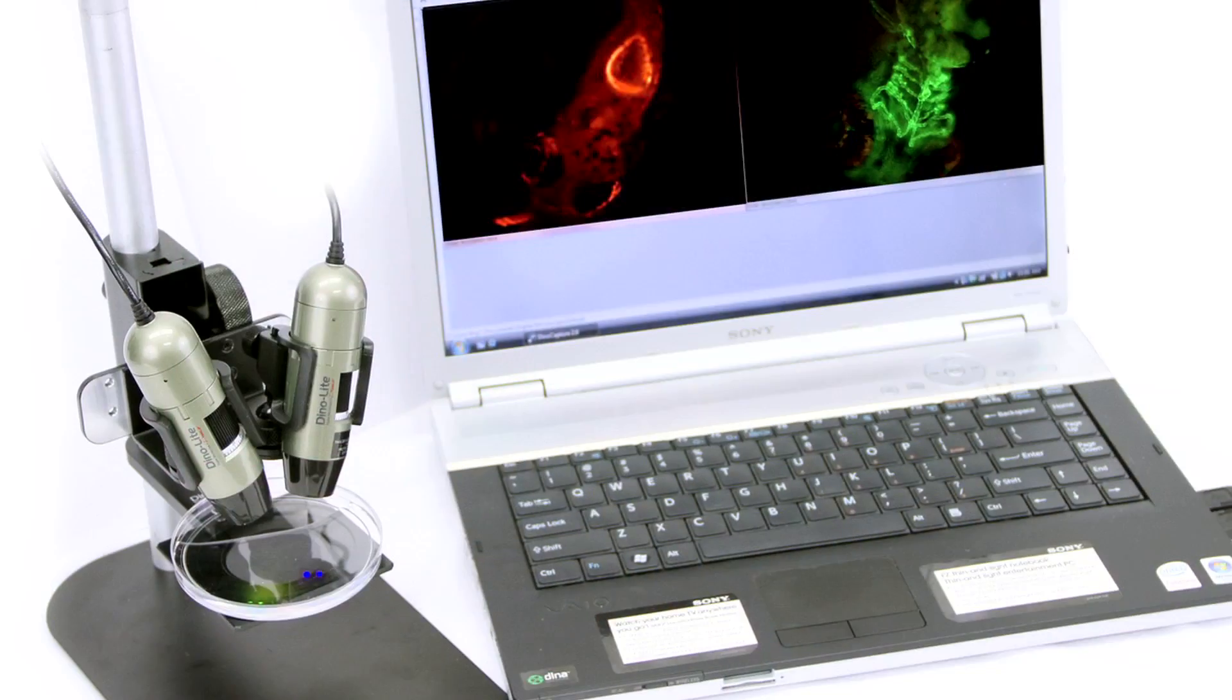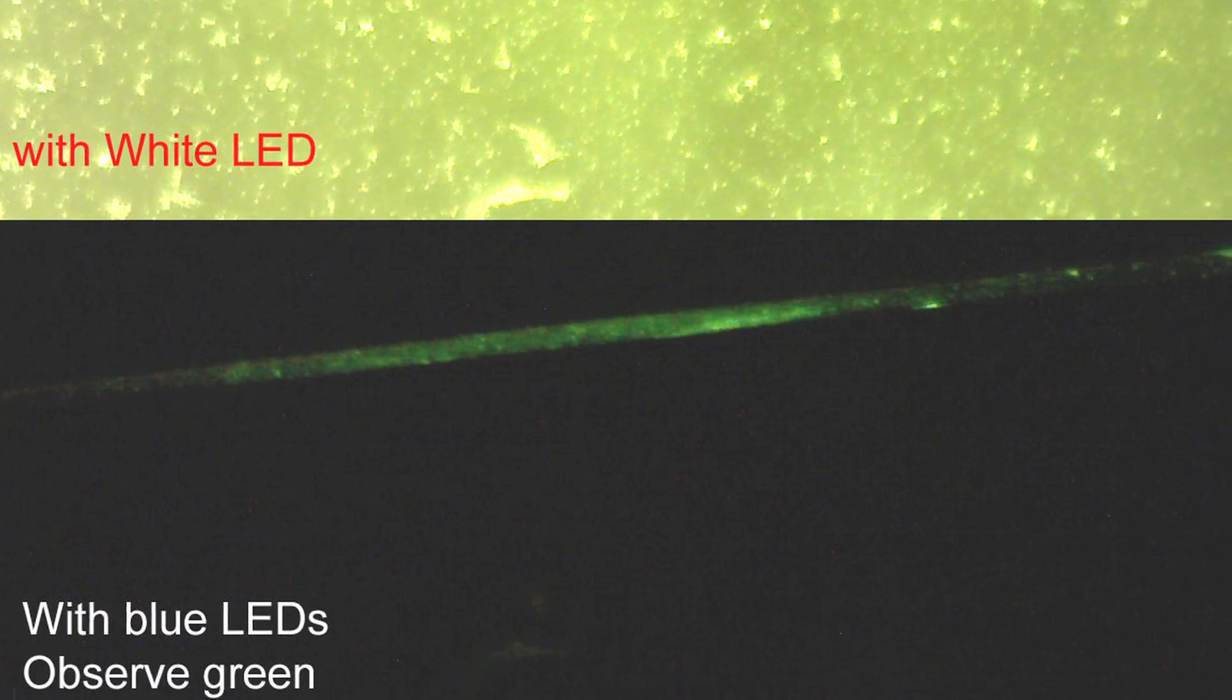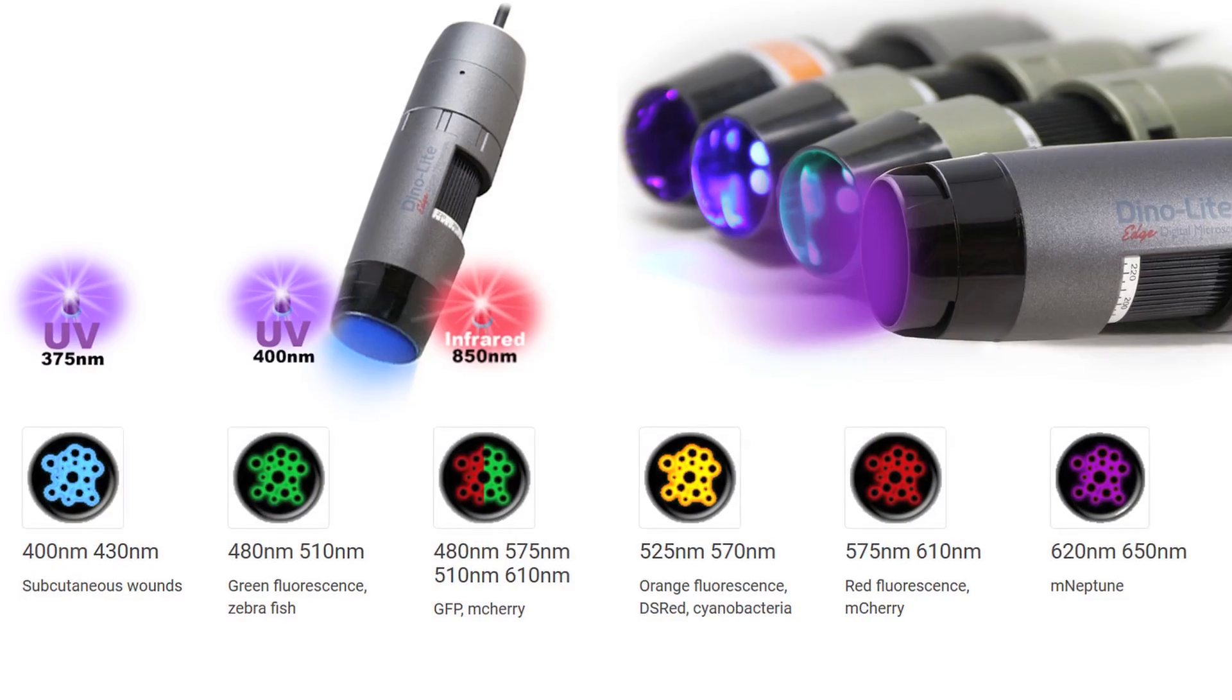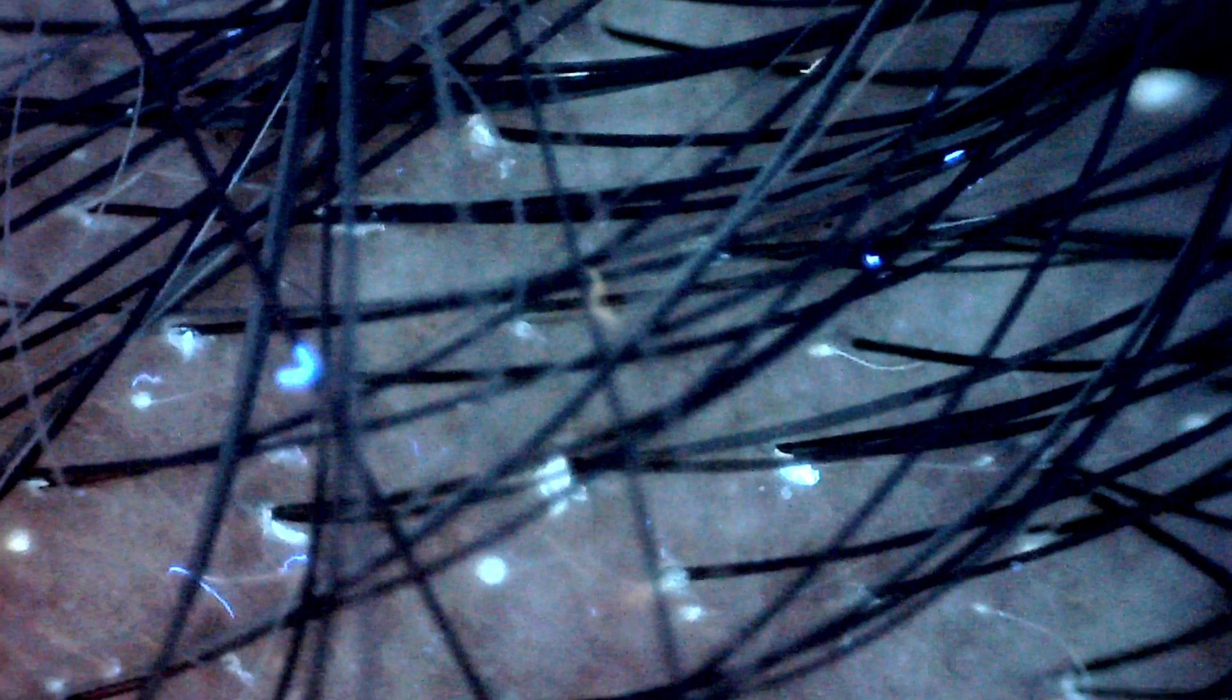The Dynolite is a handheld microscope camera that connects to a computer via USB with standard models going up to 220 times magnification. These fluorescence models use special LED lighting with various fluorescent wavelengths.